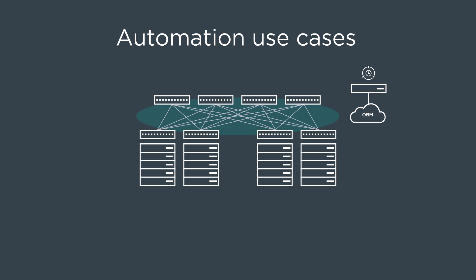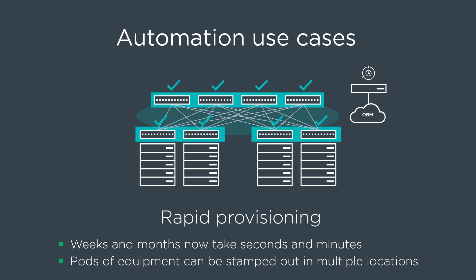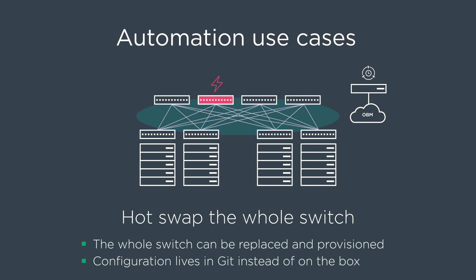Automation has many different use cases. In the most basic sense, it provides rapid provisioning — what used to take weeks and months now just takes seconds and minutes. It also allows for hot swapping of entire switches, either through RMA or replacement for other reasons, and because configurations live in the automated system, they can easily be reapplied quickly.